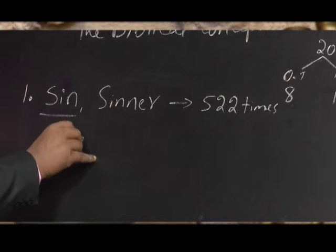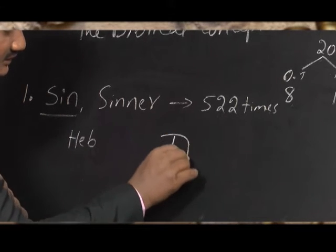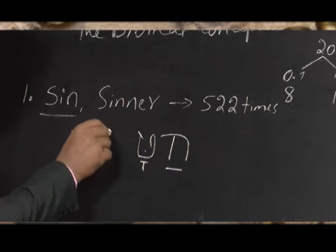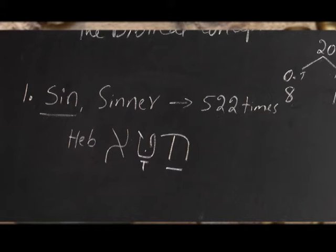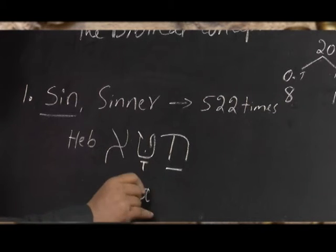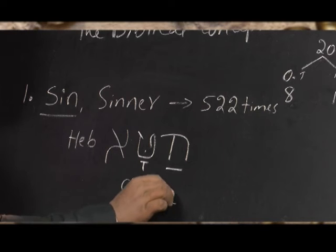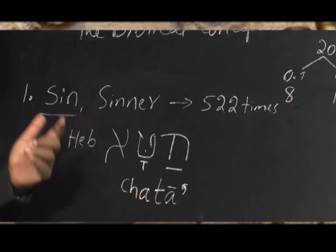Let us see what the word sin is in the Hebrew language. The word is 'khata.' It is spelled with the letters: Het (which is 'ch'), then Tet (which is 't'), then Kameks (which is 'a'), and then Aleph (which has no sound — it is silent). So the word is: khata.